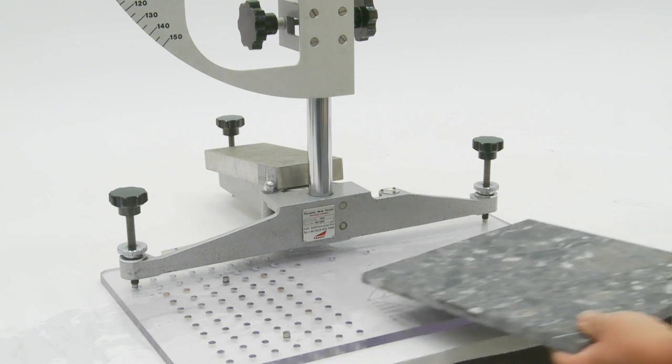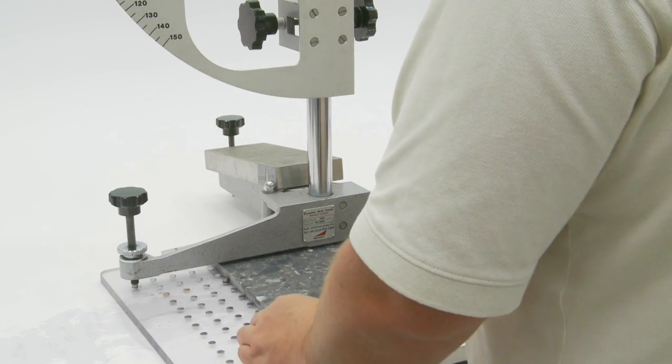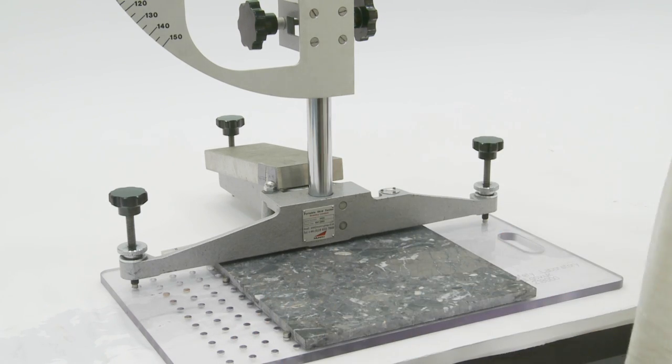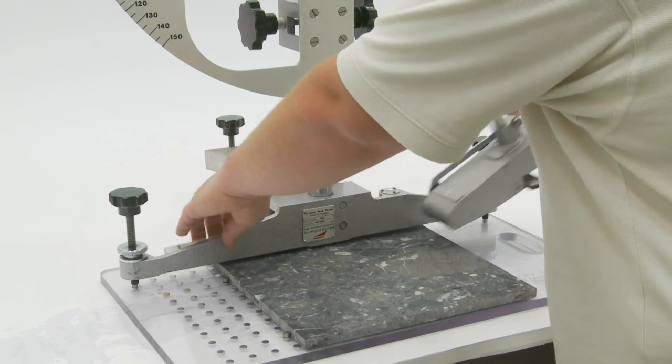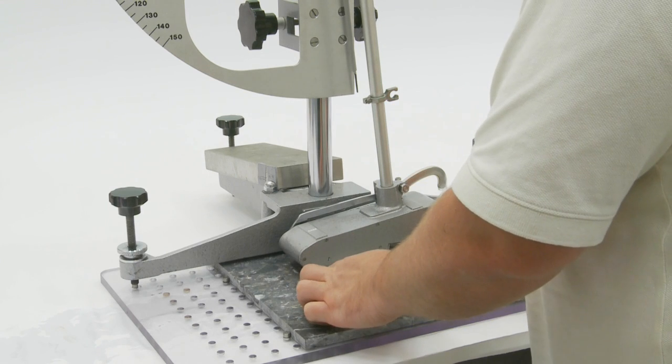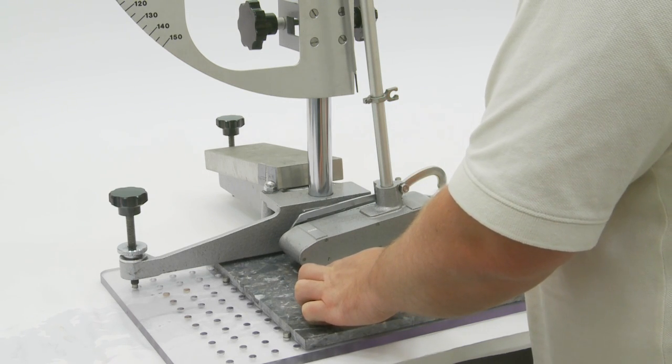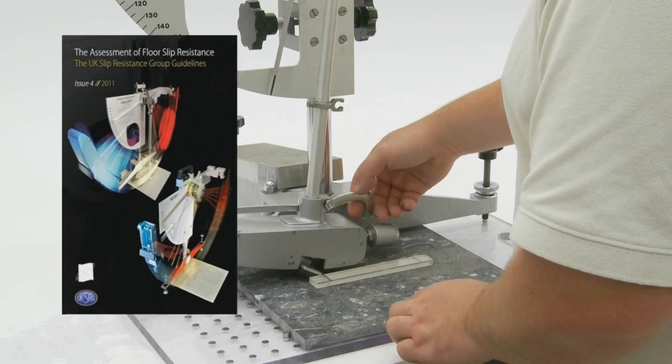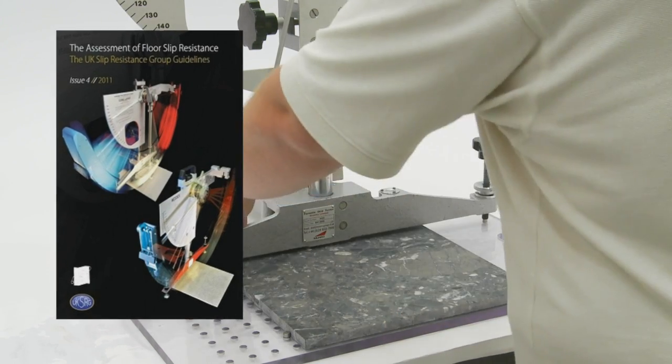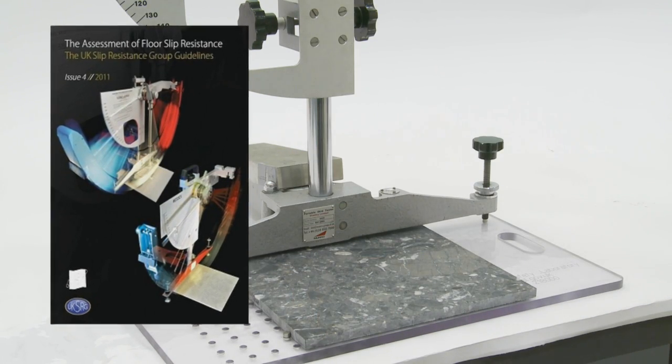This video looks at how to set up and use the pendulum testing machine to test samples in a laboratory environment and highlights the key factors that affect the reliability of the results. It's been designed to complement the written guidelines which are an essential reference and is not intended to be a substitute for training.